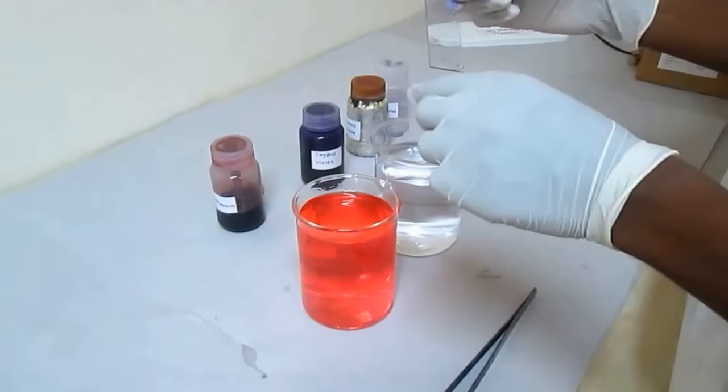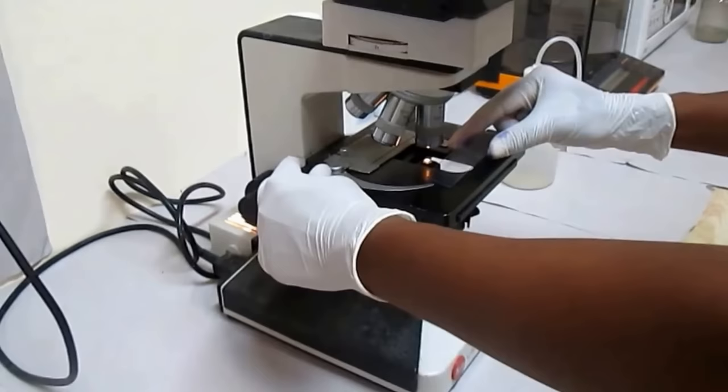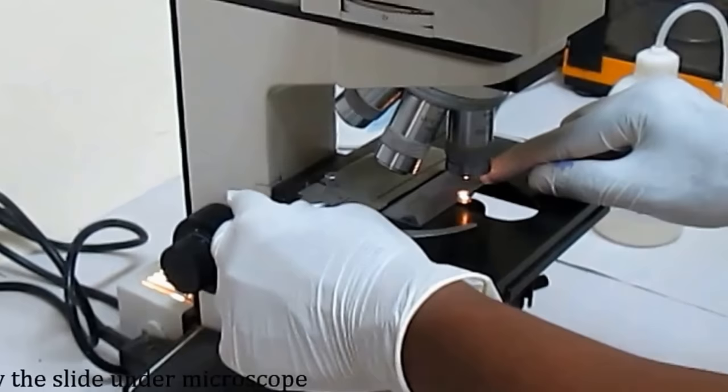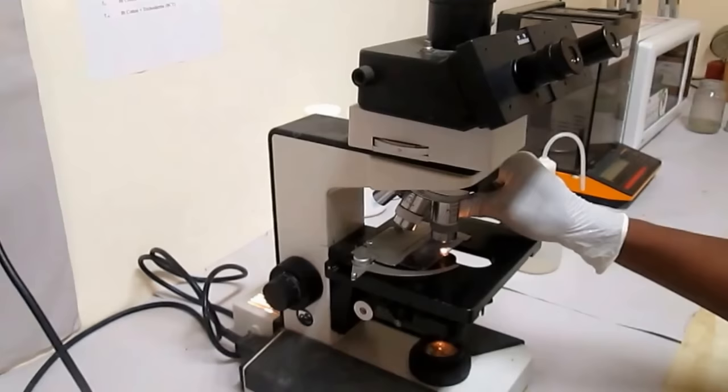Now your slide is ready to view under the microscope. Place the slide under the microscope at 100x oil immersion objective lens. This will produce the image showing gram positive as purple and gram negative as pink color bacteria.